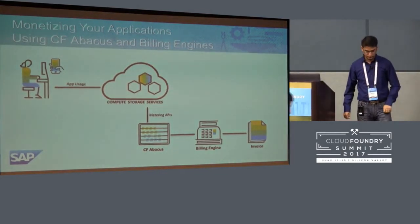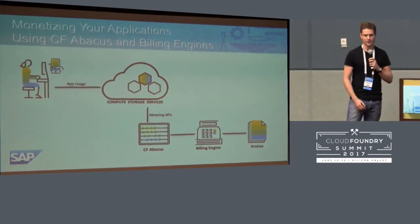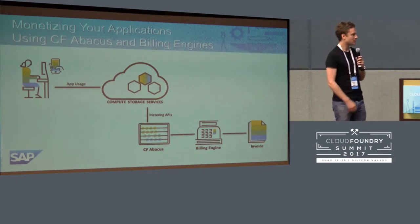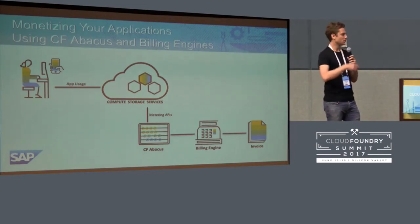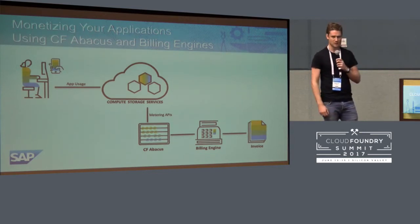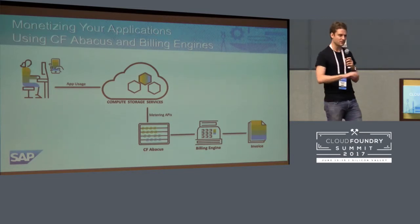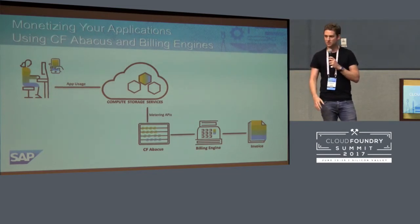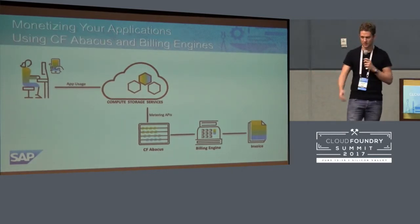If we look at what this architecture looks like, it's a fairly standard billing architecture where you have a user consuming services, and it could be users, applications, or anything. It goes up to the cloud and is metered by CF Abacus. Then the billing engine kicks in — it knows the contract terms, the pricing, and all those things. It creates correspondence with the customer, charges credit cards or other payment methods, and follows up if they decide not to pay. What's different in this ecosystem with multiple parties is the billing engine potentially creating five or ten transactions behind the scenes from a single transaction.